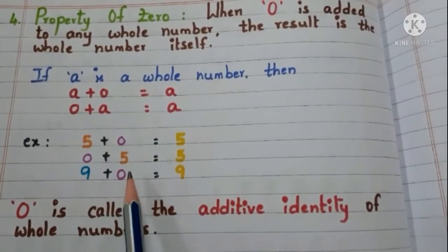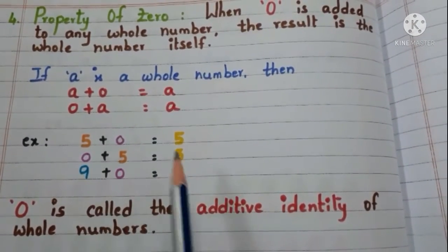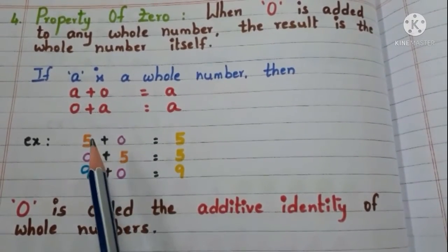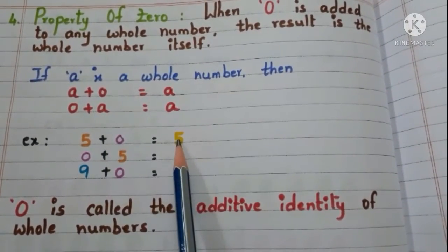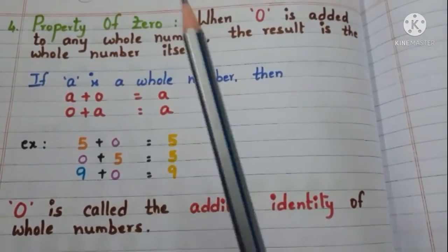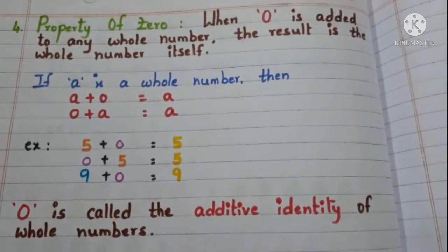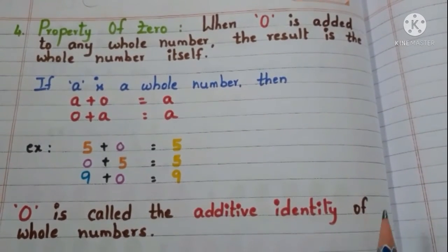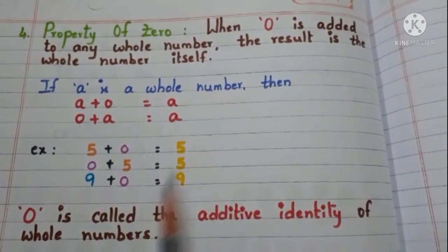Now add 9 plus 0. 9 plus 0 is 9 itself. See when 0 is added to the whole number the result is the whole number itself. This is the property of 0. So 0 is called the additive identity of whole numbers.